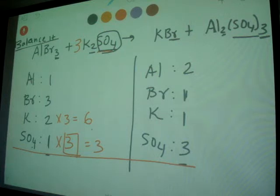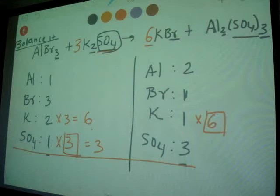So that means we need to multiply by 6 here. When you multiply by 6 here, you need to put 6 right there. Now when you multiply by 6 here, bromine becomes automatically 6.